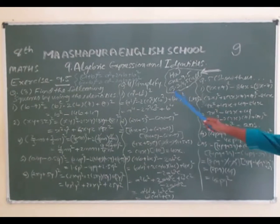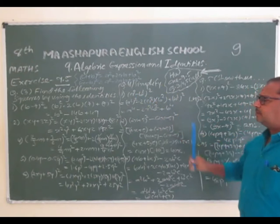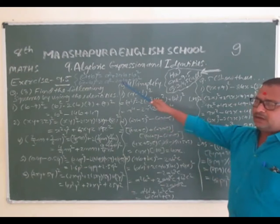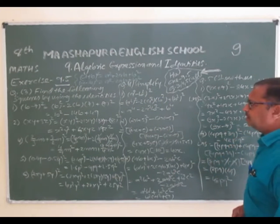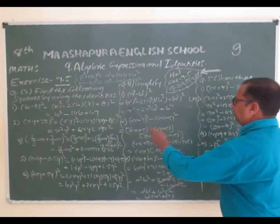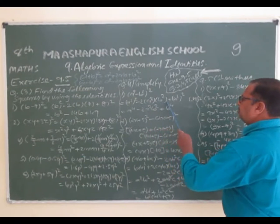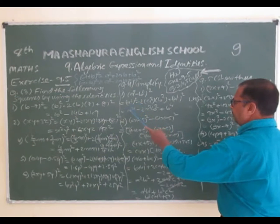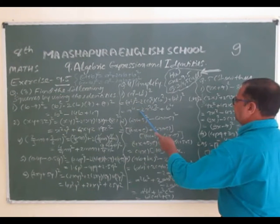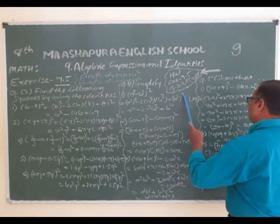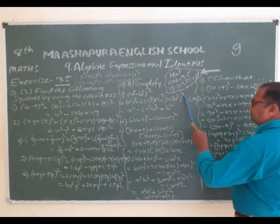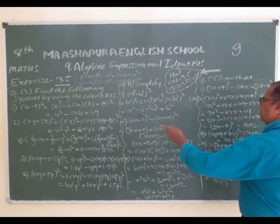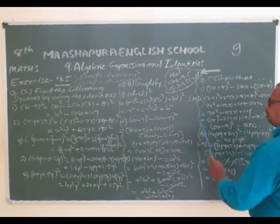Question number 4: (a² - b²)² uses the (a - b)² identity: a² squared minus 2×a²×b² plus (b²)² = a⁴ - 2a²b² + b⁴.